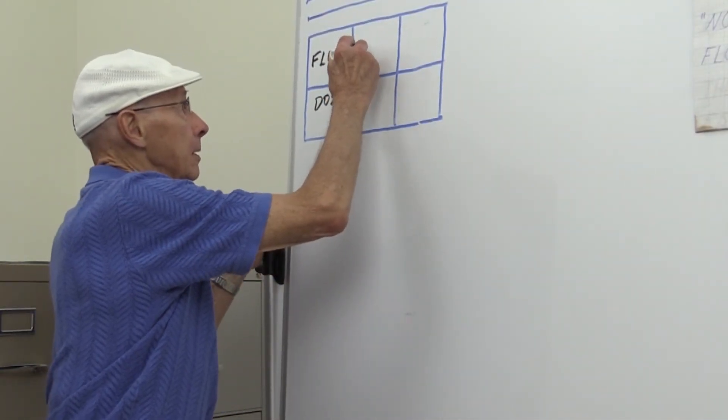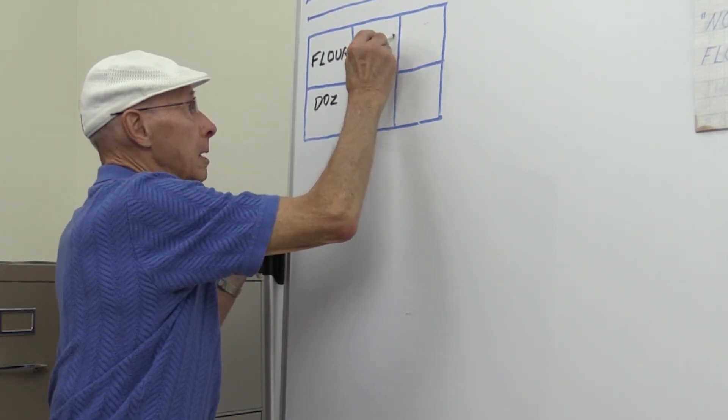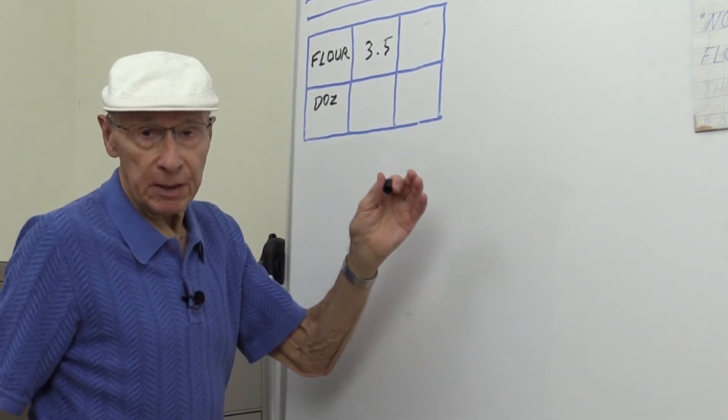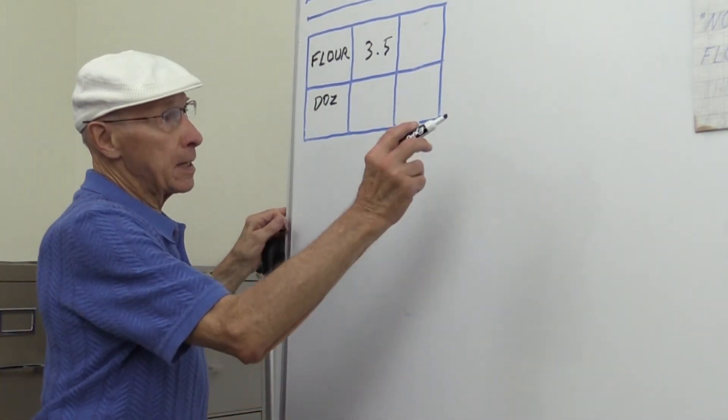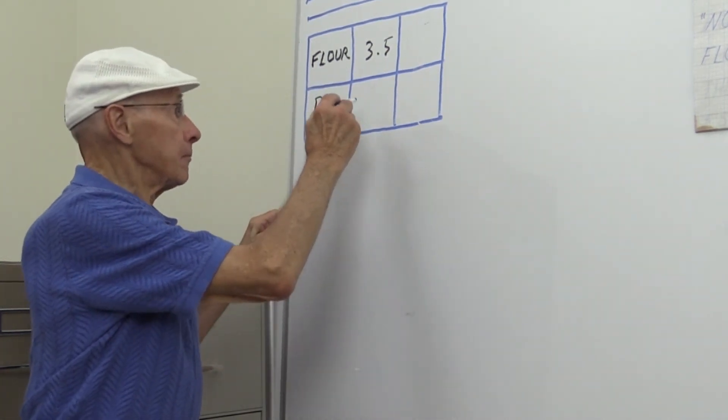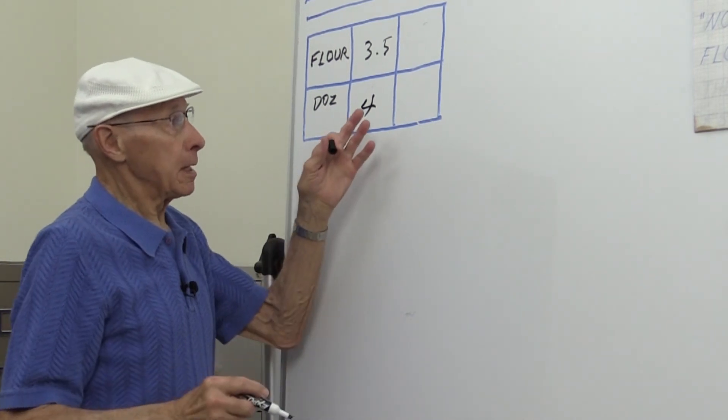So what I did: I took the half and changed it to a decimal, and then the number of sugar cookies for this 3½ cups of flour is 4 dozen. And then the other ratio is x, which is the number of cups that we need to make 10 dozen.